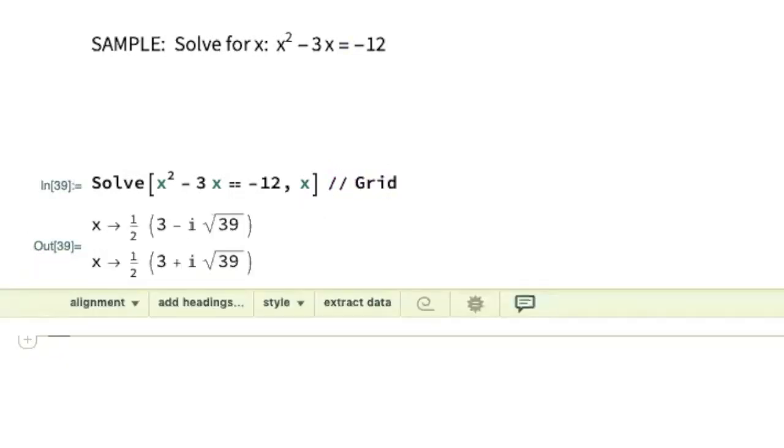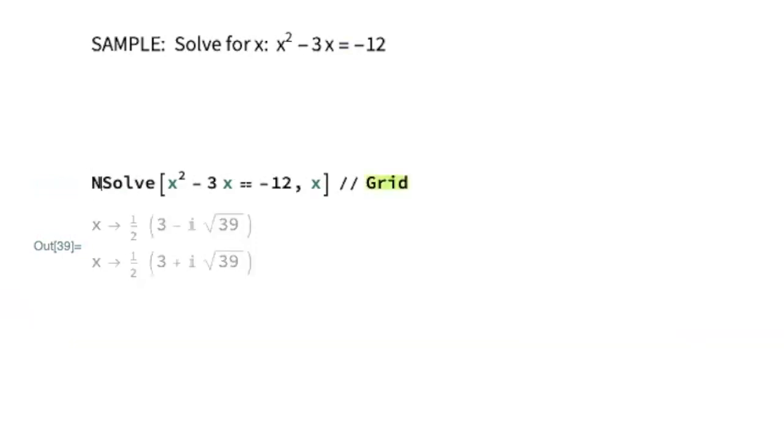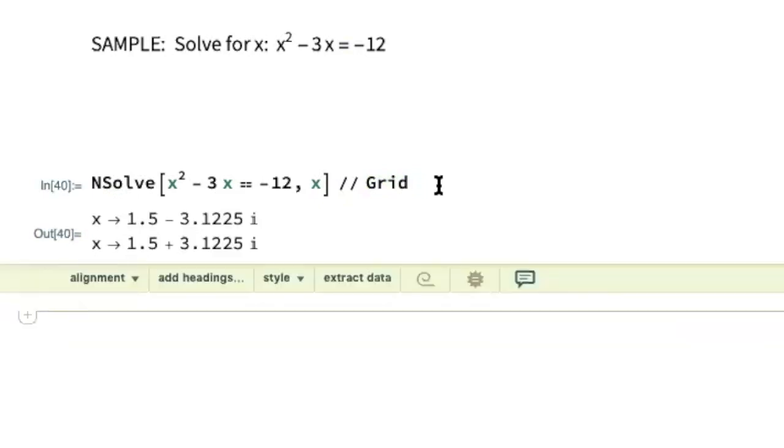The last option that you can use with the Solve command is if you put the capital N in front of Solve. As you've seen in the previous labs, when you see a capital N, it means it's going to give a numerical value output. Mathematica's default is to give you the exact value. When I switch it to numerical, you can see how my exact values have now been converted to decimals. So that's how you use the NSolve command.